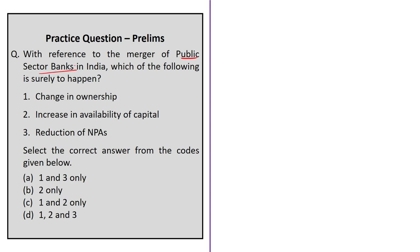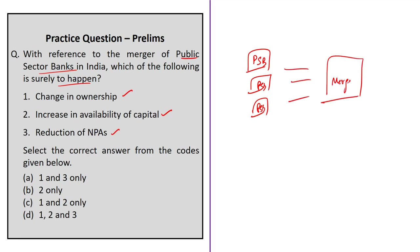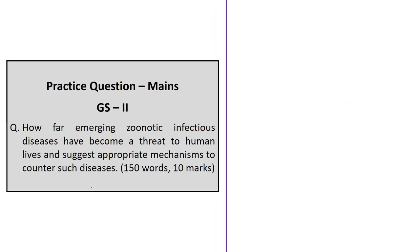The next question: regarding the merger of public sector banks in India, which of the following is sure to happen — change in ownership, increase in availability of capital, or reduction of non-performing assets? As discussed, a merger does not involve any explicit change in ownership. Mergers do increase availability of capital. Reduction of NPAs is not guaranteed — the SBI example after merging six associate banks showed that NPAs actually increased. Therefore the correct answer is option B: increase in availability of capital only.